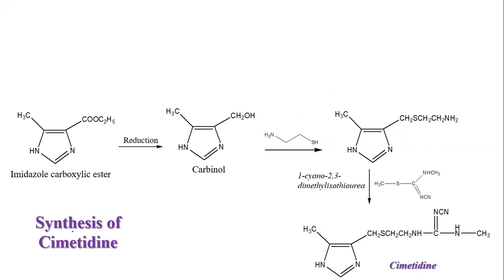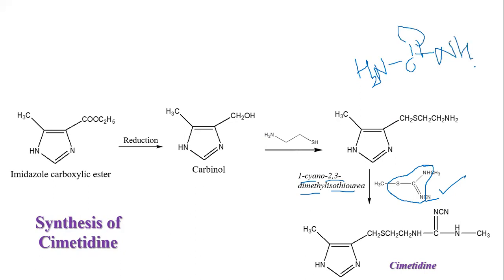This third structure is reacted with a complex nitrile. This complex nitrile consists of a CN (cyanide) group. Whenever we use cyano groups as a substituent, as per IUPAC rules, we can call it a nitrile. The name of that moiety is 1-cyano-2,3-dimethylisothiourea. If you recall, urea has the structure NH2-C(=O)-NH2. When the oxygen is replaced by sulfur, it becomes thiourea. The substituents here are methyl, methyl, and cyano — so it is called 1-cyano-2,3-dimethylisothiourea.